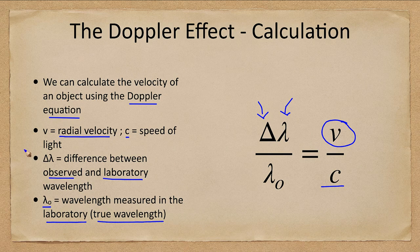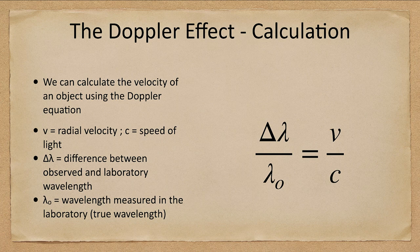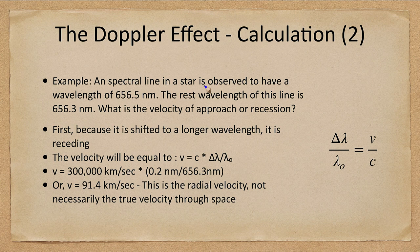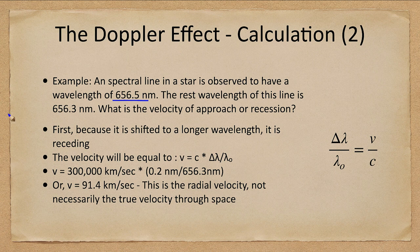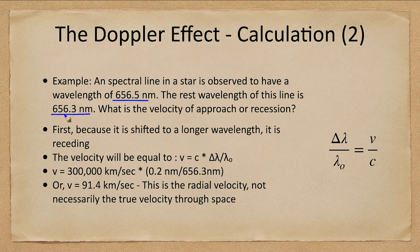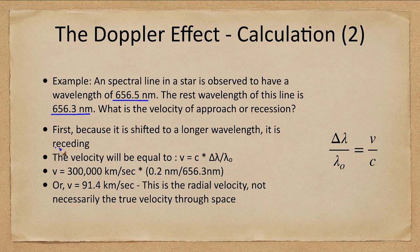We can go ahead and do an example calculation with this. Let's put some numbers in. Here's our example: a spectral line in a star is observed to have a wavelength of 656.5 nanometers. The rest wavelength is 656.3 nanometers. What is the velocity of approach or recession? First thing to look at: it is observed at a longer wavelength than it should be. Since it's observed at a longer wavelength, it's a redshift and that means it is receding. So that part of the question we can answer without any kind of calculation.